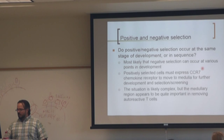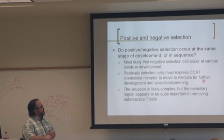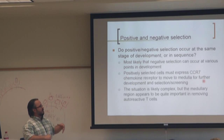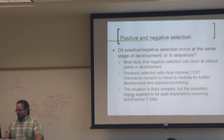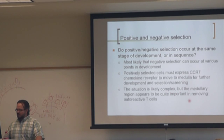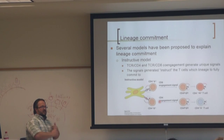If positive selection doesn't occur, those cells aren't going to move on to the medulla. As we say for most things in immunology, the situation is likely complex, but the medullary region appears to be very important for removing autoreactive T cells. In the cortex, you have both positive and negative selection. In the medulla, you have mostly negative selection. Once positive selection occurs in the cortex, cells upregulate the chemokine receptor CCR7 and move to the medulla, where if they bind to anything at all, they are going to be deleted.